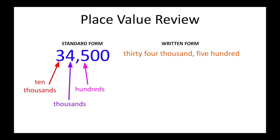In the written form you see here on the screen, I'm writing the number in periods. We know that starting from the right, each group of three numbers creates a period. The digits 500 are in the hundreds period. The digits 3 and 4 are in the thousands period. If I were to continue on to the left, I would end up in the millions period and then the billions period. The way we typically read numbers is to read them in these periods and say the place value when we get to the commas that separate the periods.